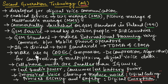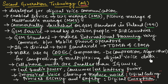The 2nd generation makes use of a codec, which is a compression and decompression algorithm. Codec was used for compressing and multiplexing the digital voice data for communication.